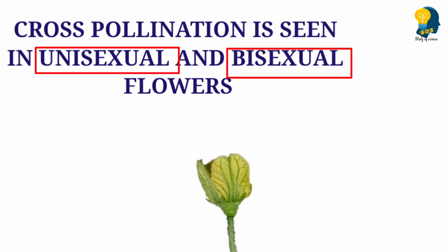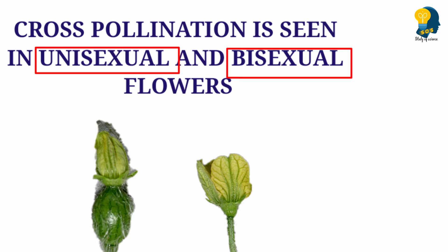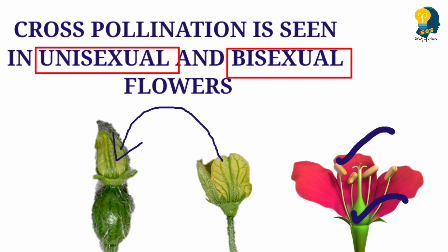In unisexual flowers, we can see only the male gamete or the female gamete. Since the male gamete has to fuse with the female gamete for reproduction, cross-pollination takes place in unisexual flowers. Sometimes cross-pollination is also seen in bisexual flowers when the stigma and anthers are not matured at the same time. During that time, the anther of one flower gets transferred to the stigma of another flower. This happens very rarely — only when both the male and female reproductive organs are not matured at the same time.